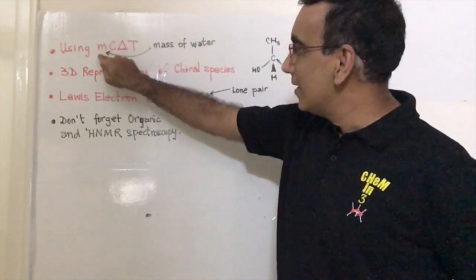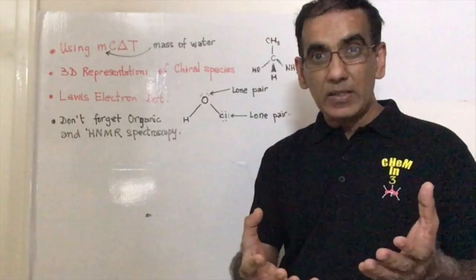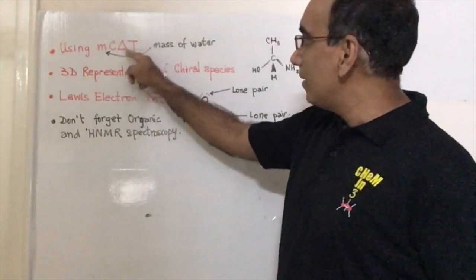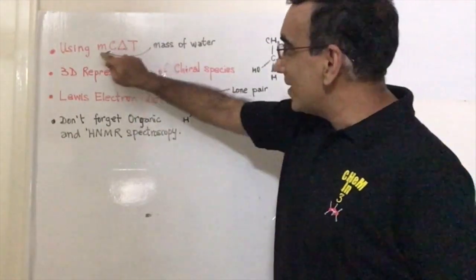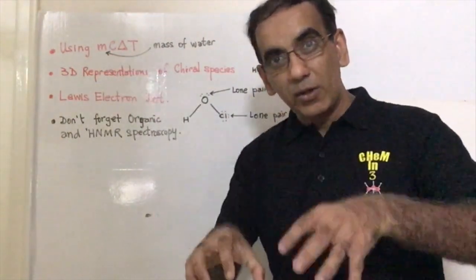this mass multiplied by the specific heat capacity, which is typically the heat capacity of water, is multiplied by the change in temperature. But this mass is not the mass of the substance per se that's being dissolved in water, but it's the mass based on the volume of water that you have in the container.